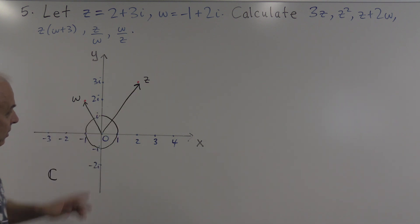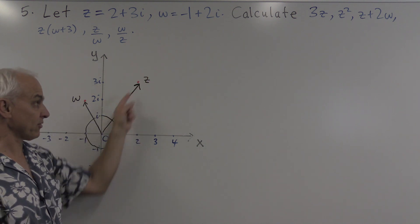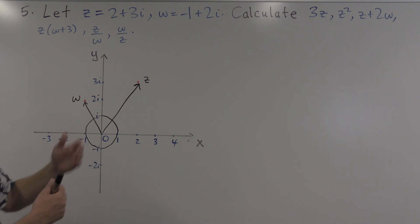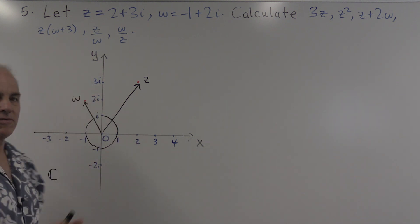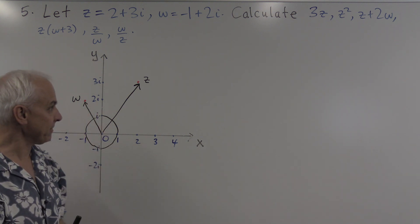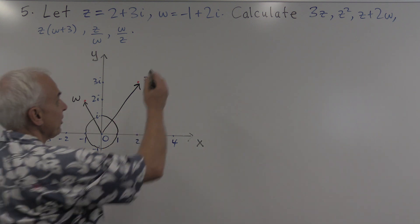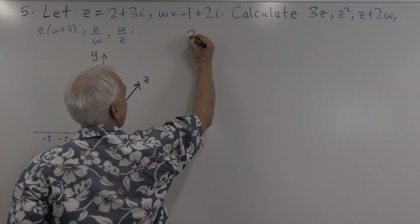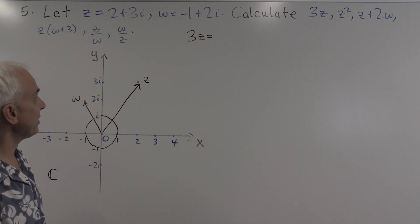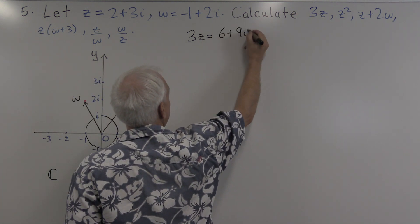When we calculate 3z, we expect to get a point which is in that direction but three times as far away. When we calculate z squared and these other combinations, they have some geometrical significance in terms of the plane. Let's start by making some calculations. 3z: z is equal to 2 plus 3i, so if we multiply that by 3, we're just going to get 6 plus 9i. That's simple enough.